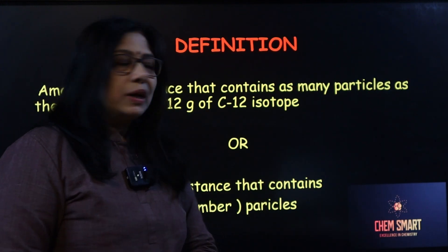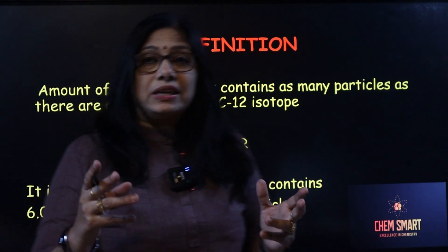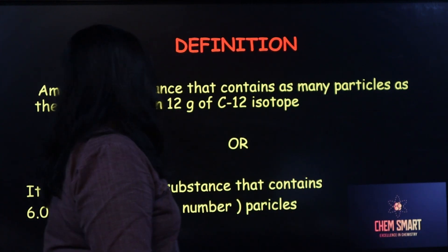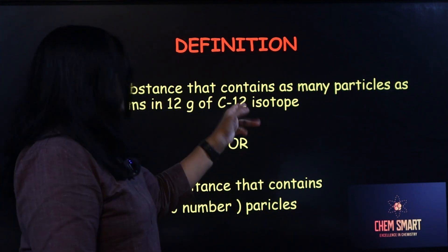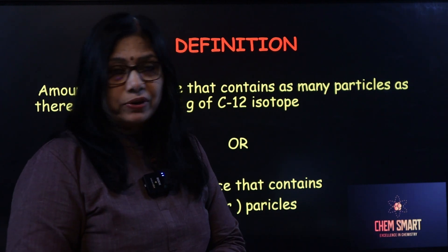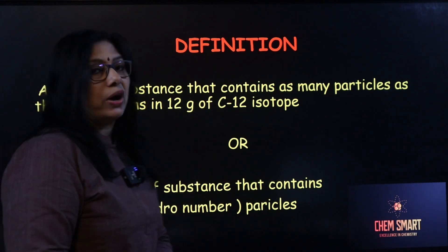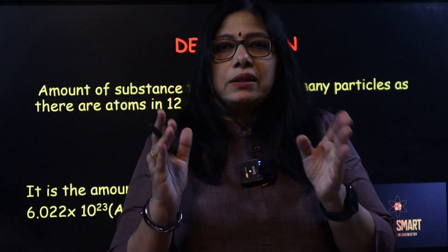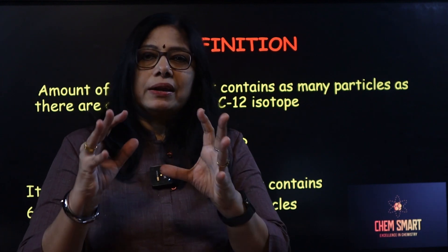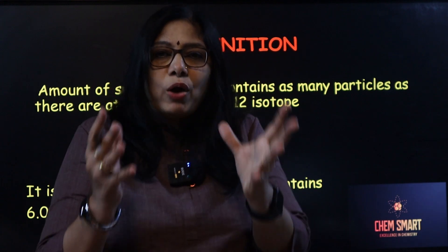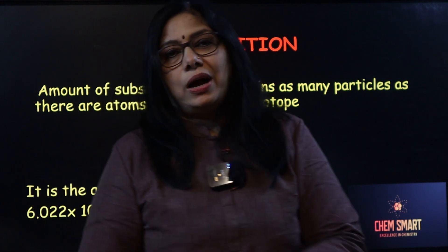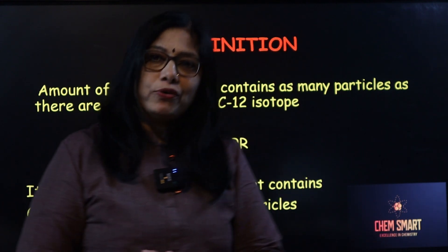What is meant by mole? Mole is the SI unit for amount of a substance. Mole is the amount of a substance that contains as many particles — these particles can be atoms, molecules, ions, formula units, whatever — as there are atoms in 12 grams of carbon-12 isotope. Those many particles will be there in one mole of a substance.